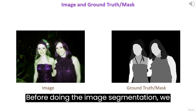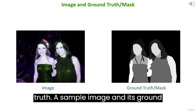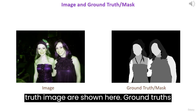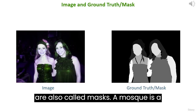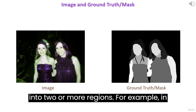Before doing image segmentation, we need to know an image and its ground truth. A sample image and its ground truth image are shown here. Ground truths are also called masks. A mask is a multi-class image that separates an image into two or more regions.